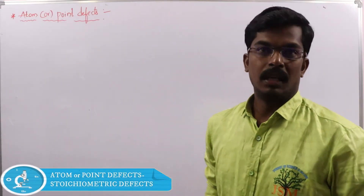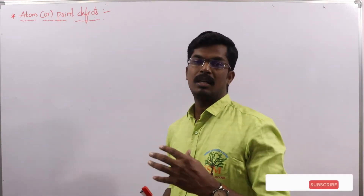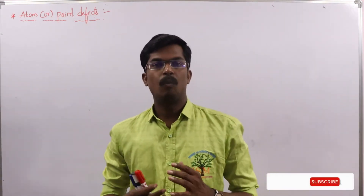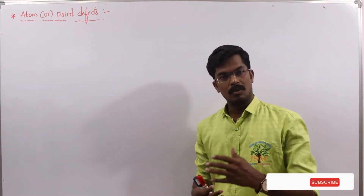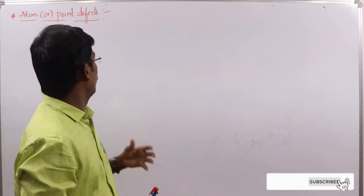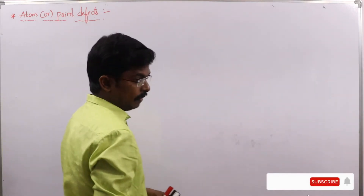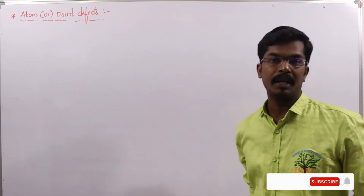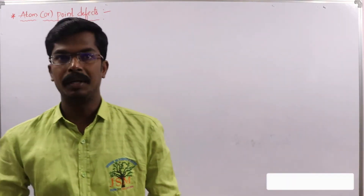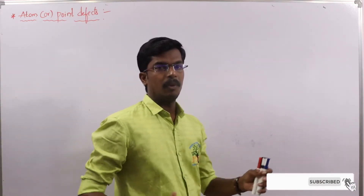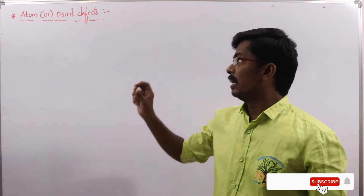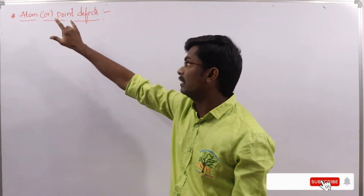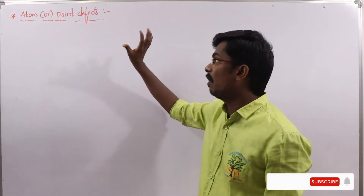Welcome. In the previous session I explained what crystal defects are, the perfect definition of crystal defects or imperfections, and the different types of crystal defects. In this session, I am going to explain one of the major important defects we observe in all crystals — that is atom or point defects. In a crystal, all lattice points are very closely packed, and any deviation or irregularities arising due to an atom are called atom or point defects.